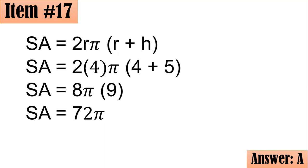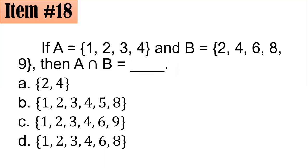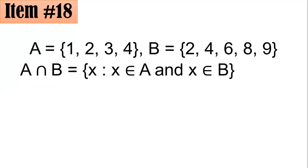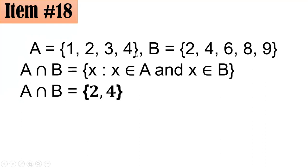Number 18. If A equals the set containing 1, 2, 3, 4 and B is the set containing 2, 4, 6, 8, 9, then A intersection B equals what? When we speak about intersection, we are talking about the elements common to both sets. A intersection B is the set of all X such that X is an element of A and X is an element of B. The elements common to both are 2 and 4. Letter A is the correct answer.